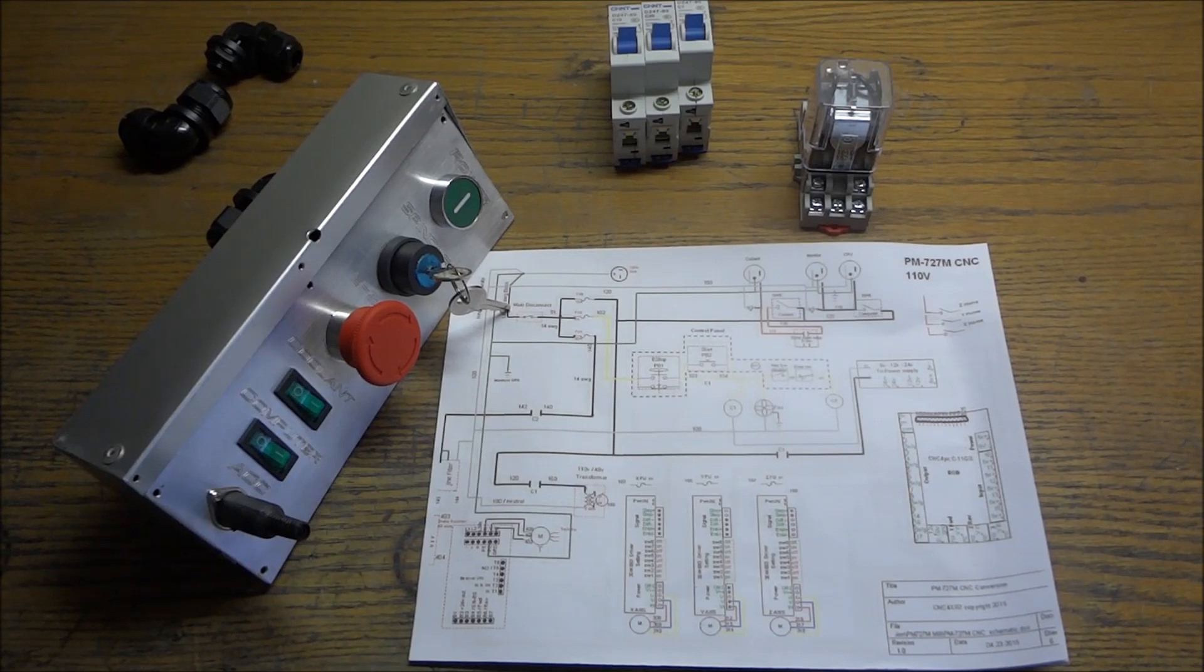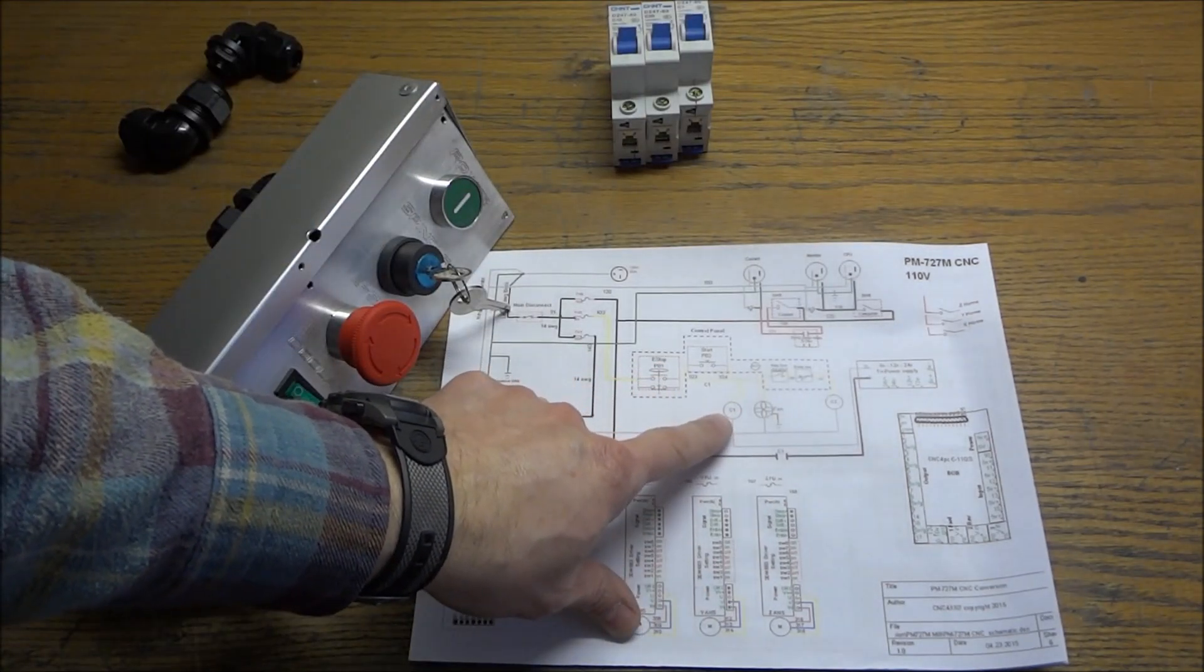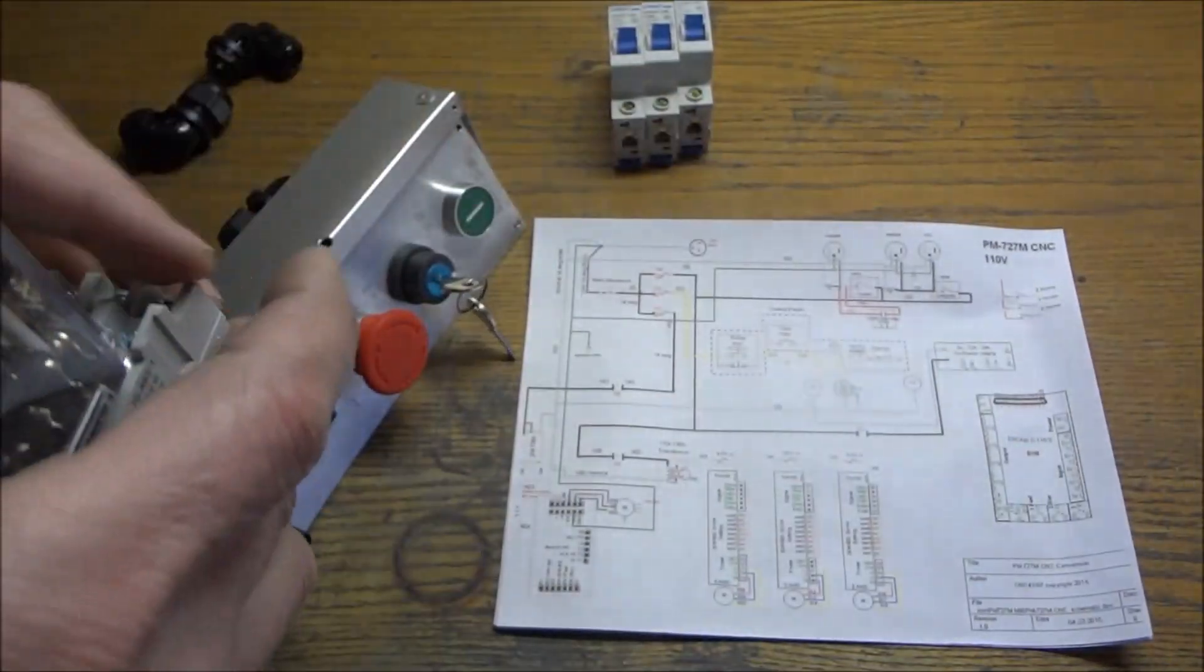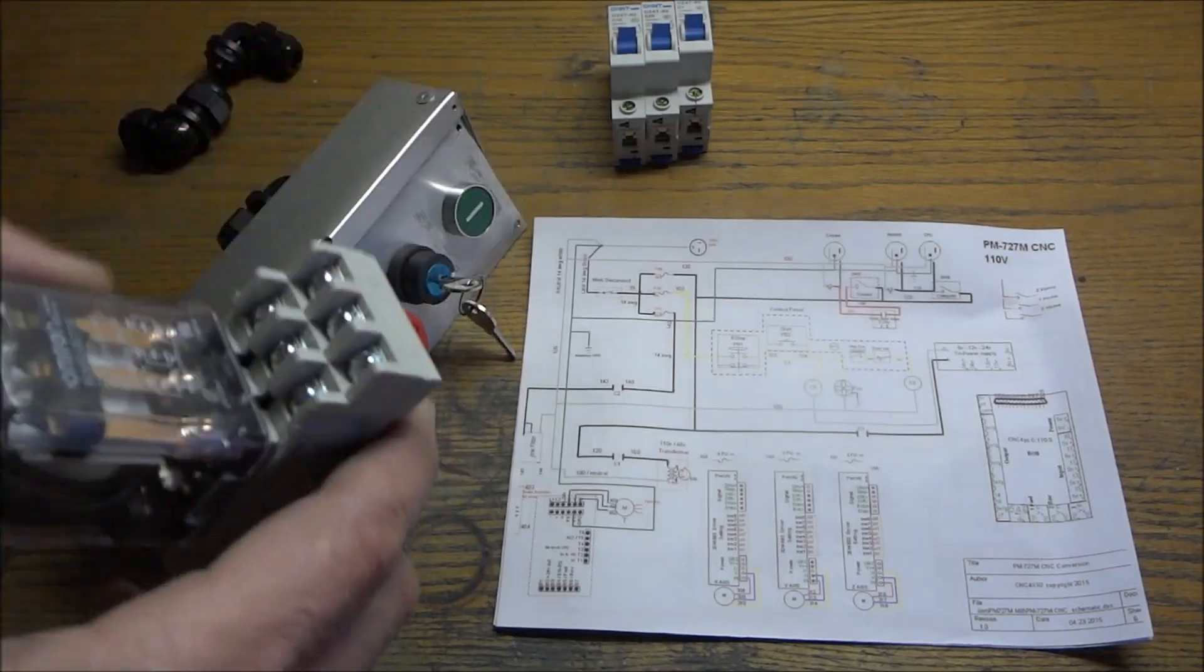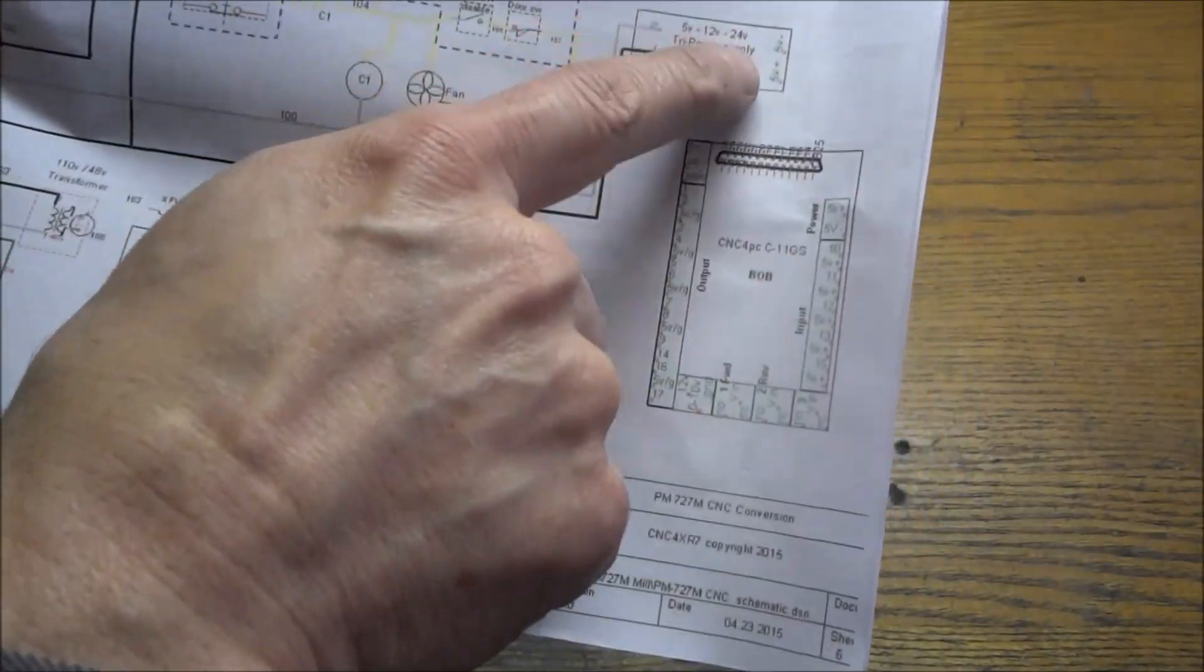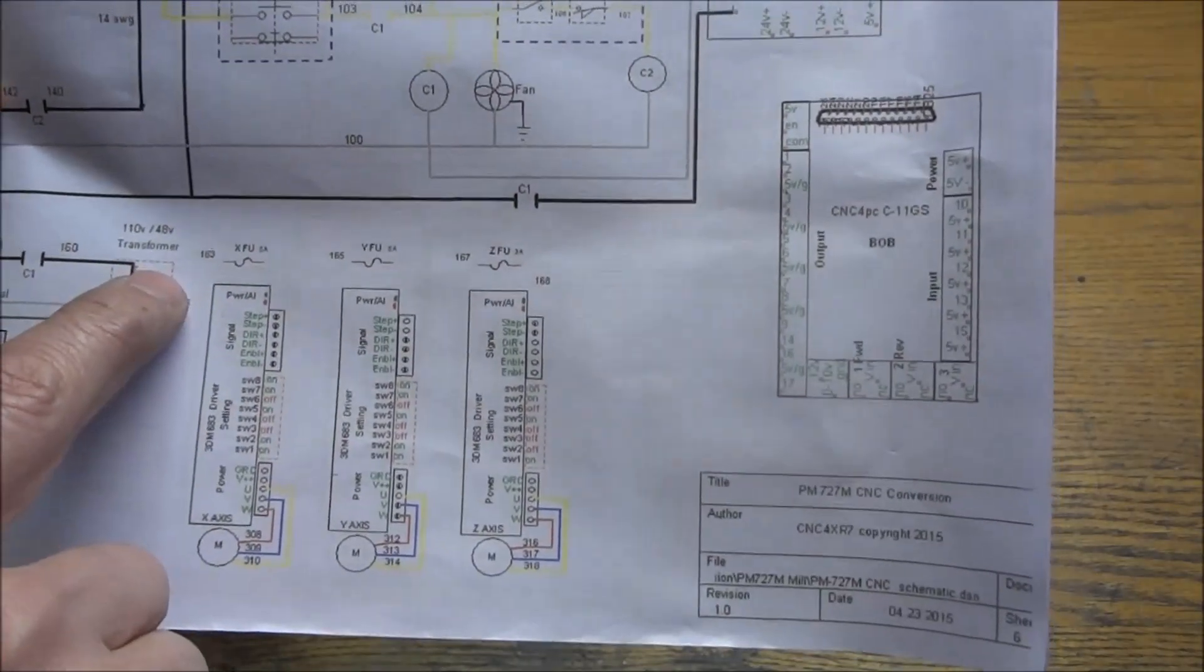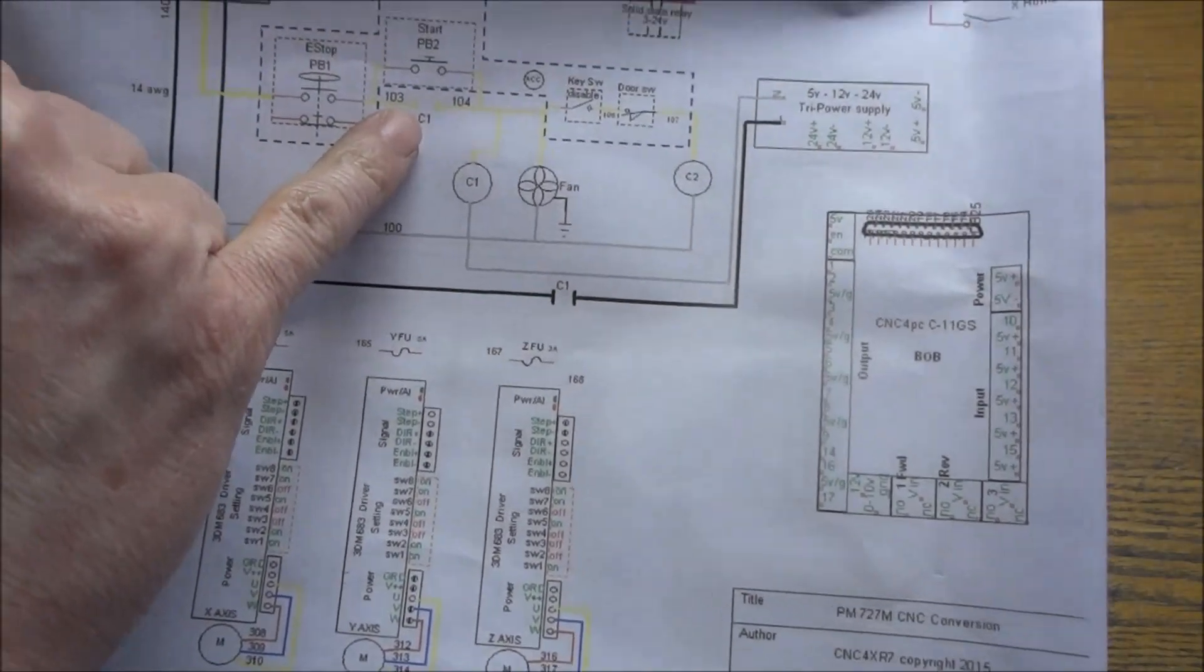One of the items that I had to change was the C1 contact, the relay, the ice cube relay. I only had a relay that had two contacts and I need three, so I had to order a different relay. As you can see, we have a set of contacts going to our five volt power supply, one going to our 48 volt transformer.